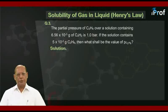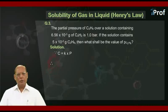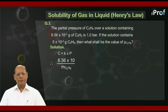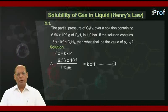Let us solve this question using the same formula, c equal to k into p. Therefore, 6.56 into 10 to the power minus 3 divided by mc₂H₆ will be equal to k into 1. Mark this as equation number 1.